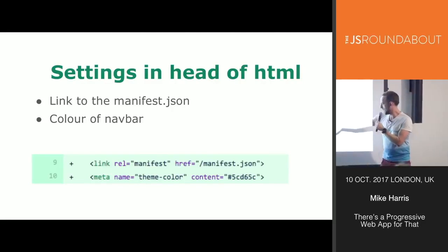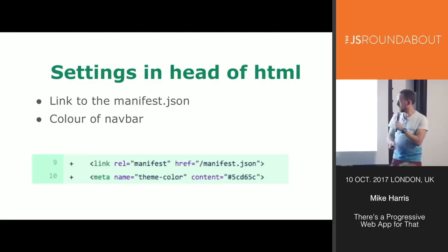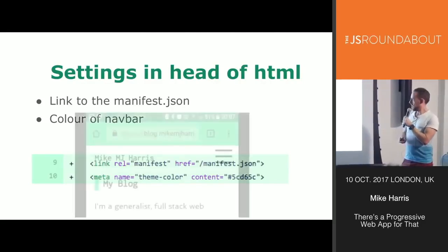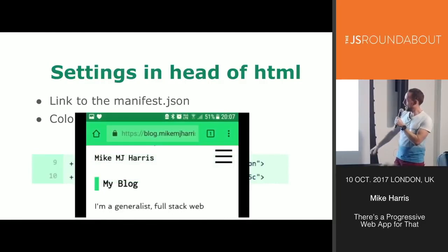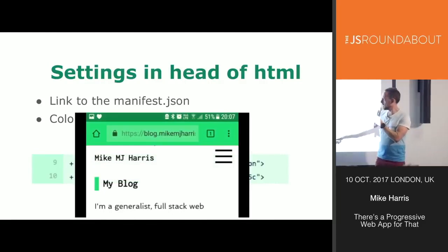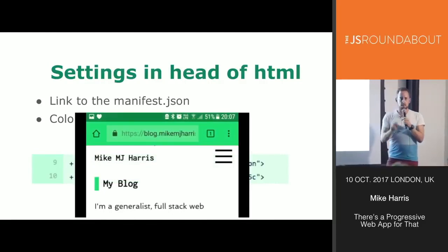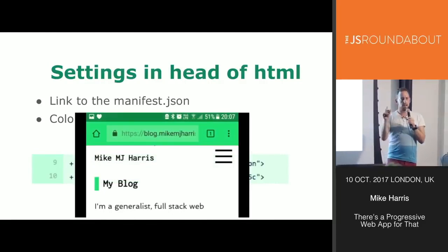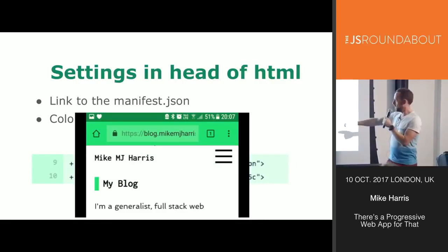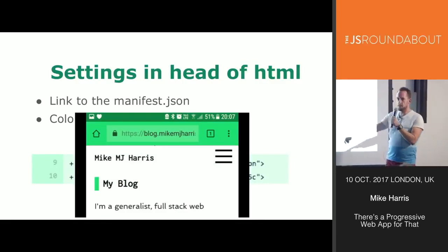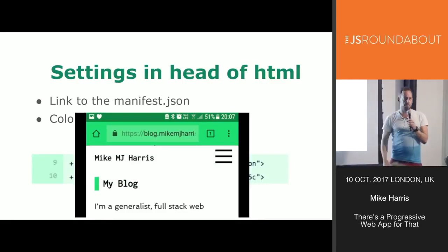The theme color is set using the hex value for my green. In a screenshot from my app on my phone, you can see that the top bar is already that green color, which fits in with the theme of my app.